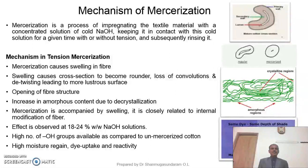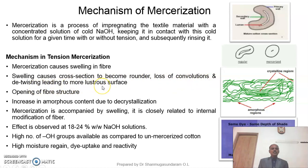Now I will discuss the mechanism involved in the mercerization process. Mercerization is a process of treating cotton fabric with concentrated caustic soda solution at very cold temperature, keeping it in contact with the cold solution for a given period of time with or without tension, and subsequently rinsing it. The mechanism in tensed mercerization: mercerization causes swelling in the fiber. Swelling causes the cross-section to become rounder, and loss of convolutions and de-twisting also takes place. Finally, you get a more lustrous surface. Please look at the figure — a regular cotton fiber cross-section becomes either circular or elliptical in cross-section after mercerization, as the fiber structure opens up.